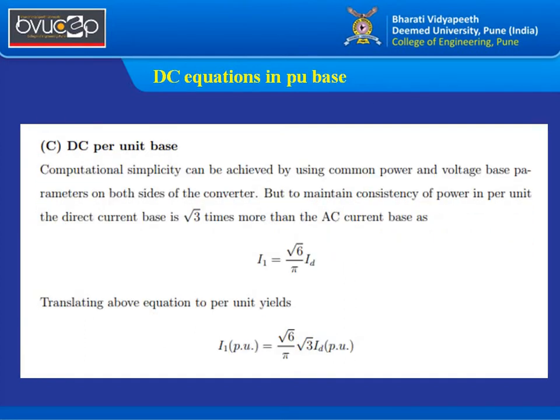Now for DC equations in per unit, to make them compatible with the AC system — note that DC values are always √3 times the AC values. So the current given by (√6/π) · ID can be converted to per unit by multiplying by √3, as shown in the equations.